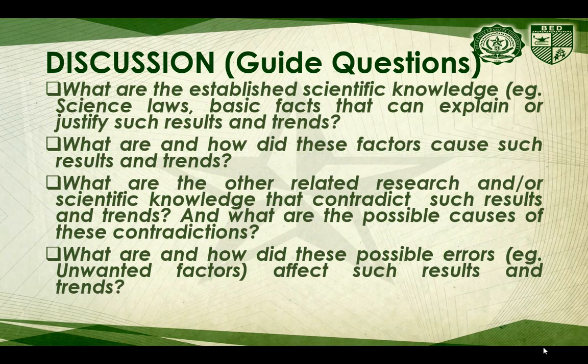What are the established scientific knowledge — examples are science laws and basic facts — that can explain or justify such results and trends? What are the other related research or scientific knowledge that contradicts such results and trends, and what are the possible causes of these contradictions? What are and how did possible errors — such as unwanted factors — affect such results and trends?